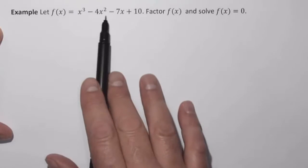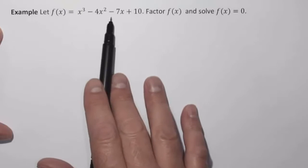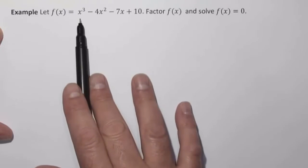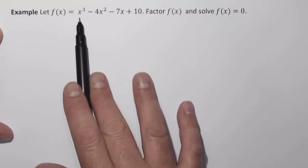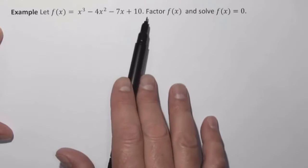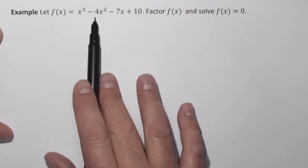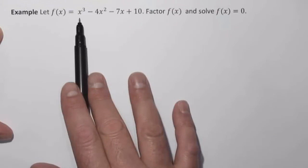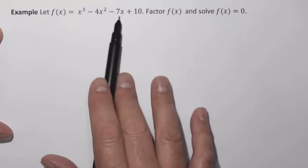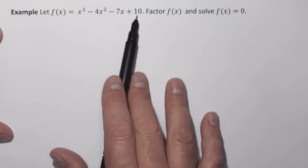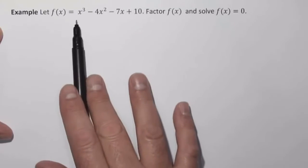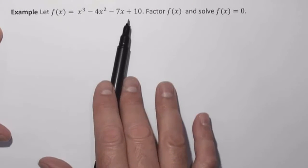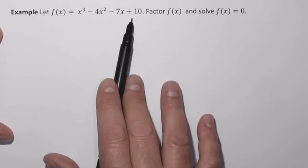Now normally, when we have a polynomial that consists of four terms, if we're going to factor it, we're going to generally use factoring by grouping. But in this particular case, factoring by grouping won't work. If I look at the first two terms, I could factor out an x squared, and that would leave x minus 4. But if I look at the second two terms, I can't factor anything out really. So I can't factor this by grouping. So I have to come up with some other way of factoring.